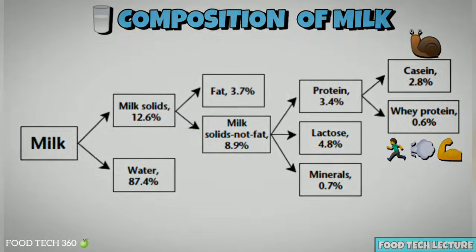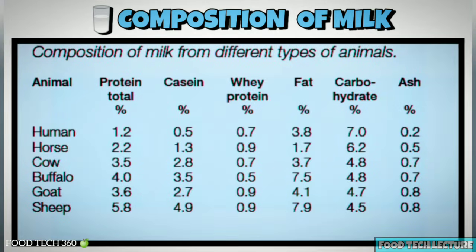This table shows the composition of milk from different types of animals. By analysing this table, sheep milk has the highest amount of protein and fat and the lowest in carbohydrates.